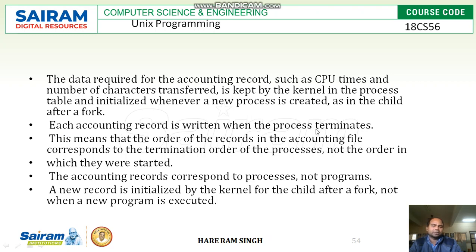Each accounting record is written when the process terminates. This is a very important point — whenever a process gets created, process accounting doesn't get created at that time. Whenever a process gets terminated, only then is the process accounting record written. This means the order of the records in the accounting file corresponds to the termination order of the processes, not the order in which they were started.